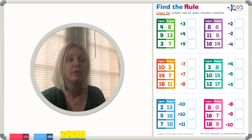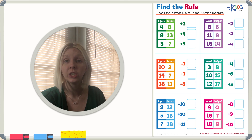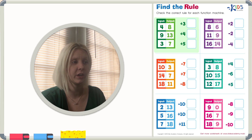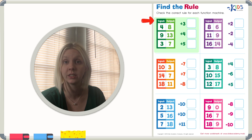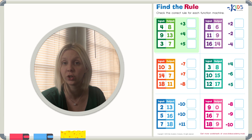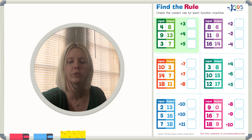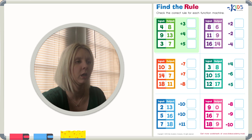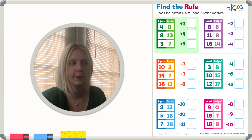The directions say: check the correct rule for each function machine. Each one of these different colored boxes are our function machines, and what we have to do is find the rule that makes sense for each one of these machines. So let's start with the first one — the green function machine right here.